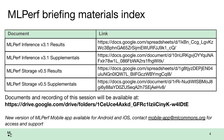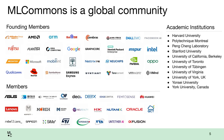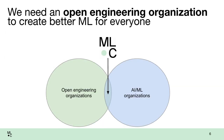As a reminder, ML Commons is a global community with members from all across six out of the seven continents — we're actively looking to get the seventh. We come together for collective engineering. ML Commons is really unique in this regard: there are a lot of ML-focused organizations but none that really do engineering, and there are a lot of engineering organizations but none that really focus on ML. We're at a unique sweet spot.